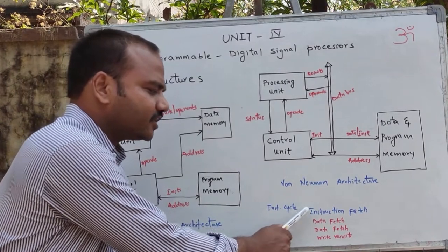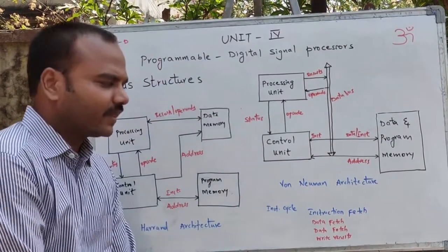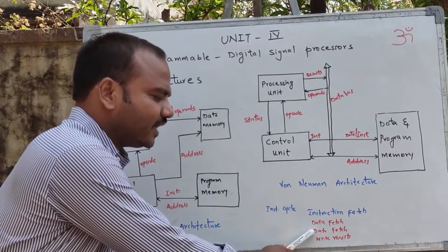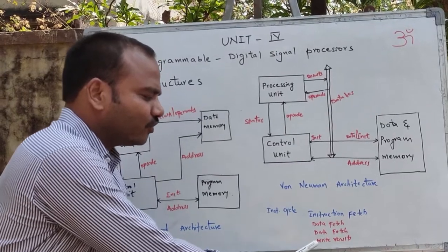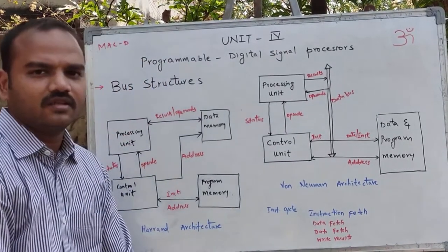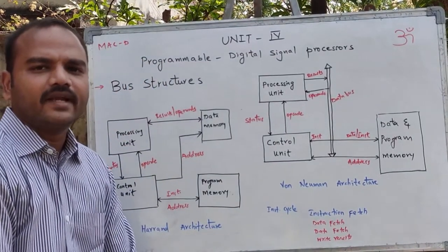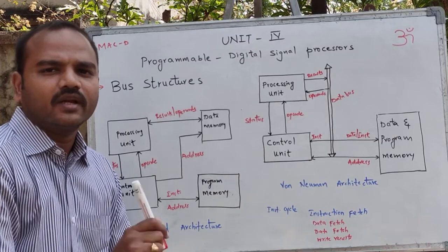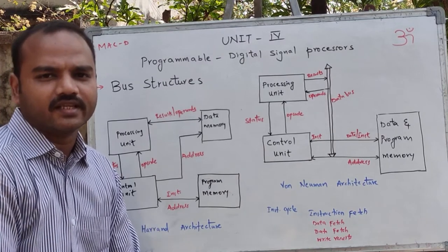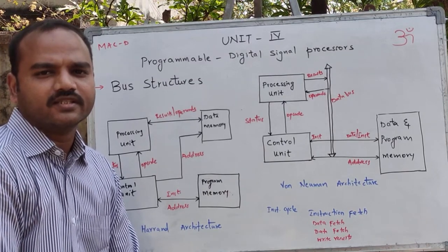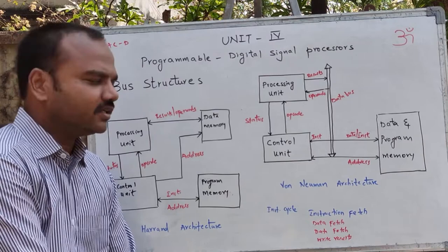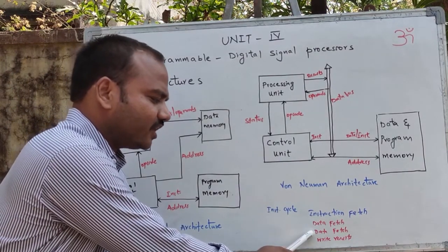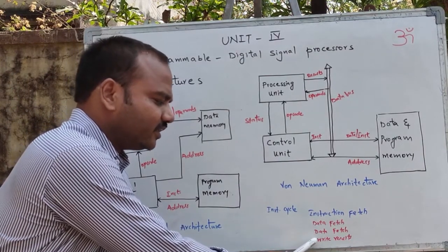The four operations of a MACD instruction are: first, instruction fetch; second, data fetch; third, data fetch; and fourth, write results. A MACD instruction requires one instruction cycle, which encompasses all four of these operations.